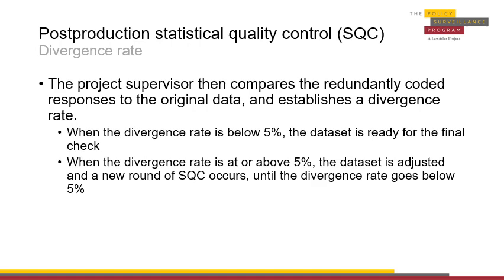When the divergence rate is over 5%, the dataset should be adjusted to ensure that the divergence rate goes down. For example, if certain questions are leading to a higher divergence rate, protocol notes, adjustments to the question, and adjustments to the responses can be helpful in reducing the divergence rate. SQC should be repeated until a divergence rate of 5% or below can be established.